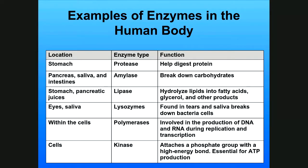There are lots of examples of enzymes in the human body. In the stomach, proteases digest proteins. In the pancreas, saliva, and intestines, amylases break down carbohydrates. In the stomach and in pancreatic juices, lipases hydrolyze lipids into fatty acids and glycerol.